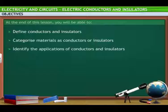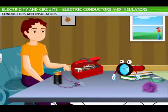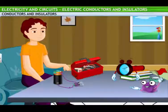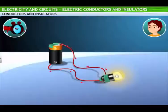You will learn about conductors and insulators. At the end of this lesson, you will be able to define conductors and insulators, categorize materials as conductors or insulators, and identify the applications of conductors and insulators. Insulating material does not allow electricity. Let me explain. All materials do not allow electricity to pass through them. Like me, I don't allow electricity to pass through me. It won't be much use putting me in this circuit.